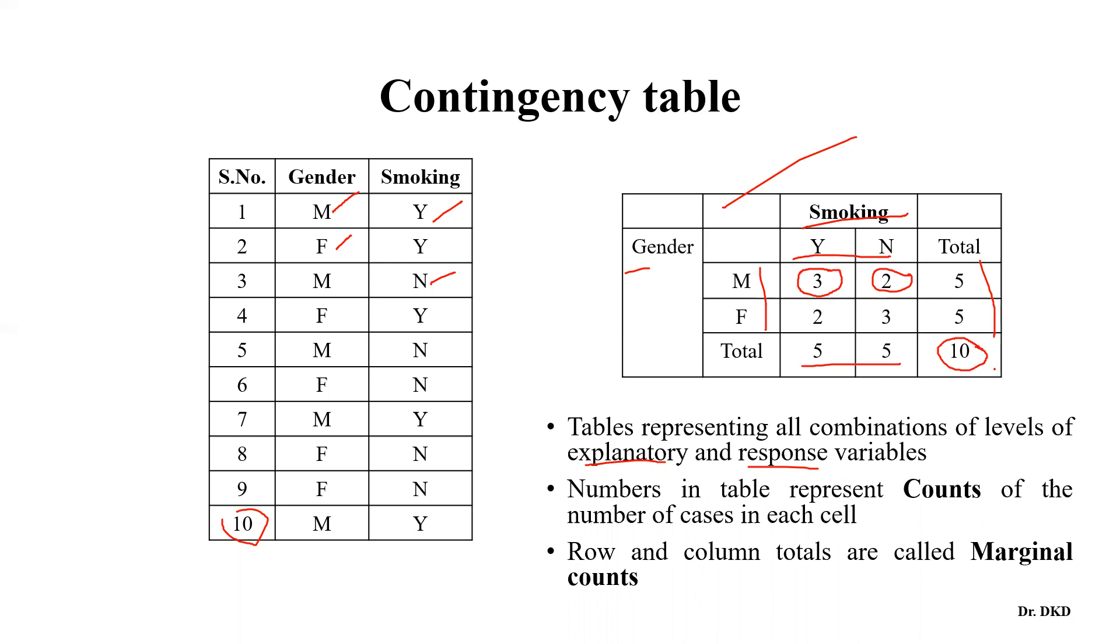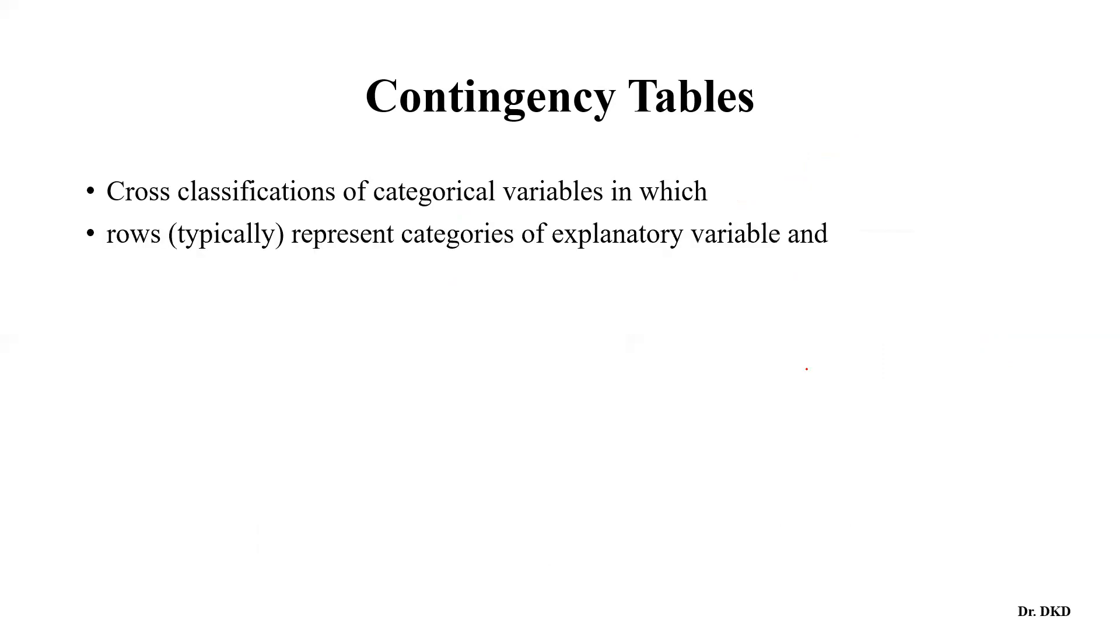So this is the basic information about contingency tables. In contingency tables, we need to understand the cross-classification of categorical variables, in which rows typically represent the explanatory variable and columns represent categories of response variables.